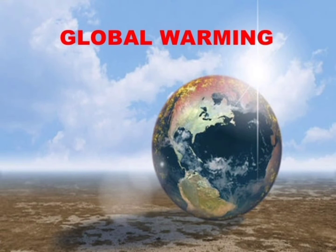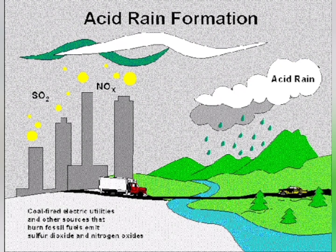Burning of fossil fuels, deforestation and agricultural activities release a lot of carbon dioxide. This increased amount of carbon dioxide in the air traps the heat radiated from the earth, and this is known as the greenhouse effect or global warming.